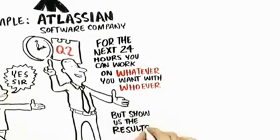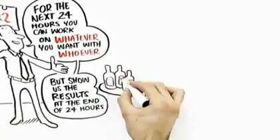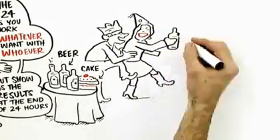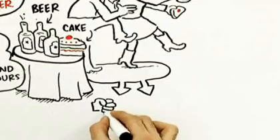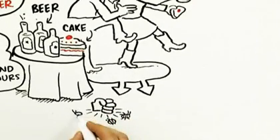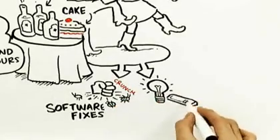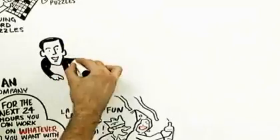All we ask is that you show the results to the company at the end of those 24 hours in this fun kind of meeting, not a star chamber session, but this fun meeting with beer and cake and fun and other things like that. It turns out that that one day of pure undiluted autonomy has led to a whole array of fixes for existing software, a whole array of ideas for new products that otherwise had never emerged. One day.